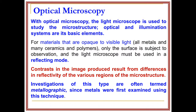Hello guys. In the previous class we discussed the preparation of a metallography specimen. Once you prepared the specimen and subsequently done the etching, the next step requires an optical microscope for the observation of microstructure. The metallurgical microscope, or light microscope, is used for the study of microstructure.